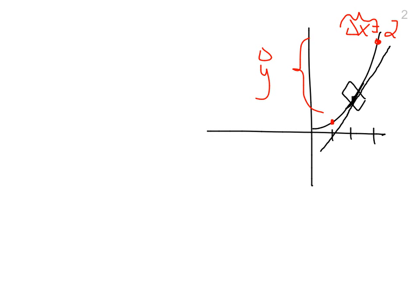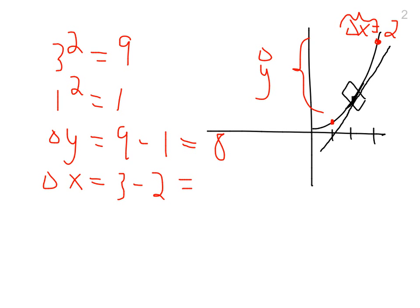would be 2. So what's x squared at 3? 3 squared is equal to 9, 1 squared is equal to 1. So your change in y is equal to 9 minus 1 which equals 8, and your change in x is equal to 3 minus 1 which is equal to 2. So now if you do dy over dx, you do dy divided by dx, 8 over 2 is equal to 4.